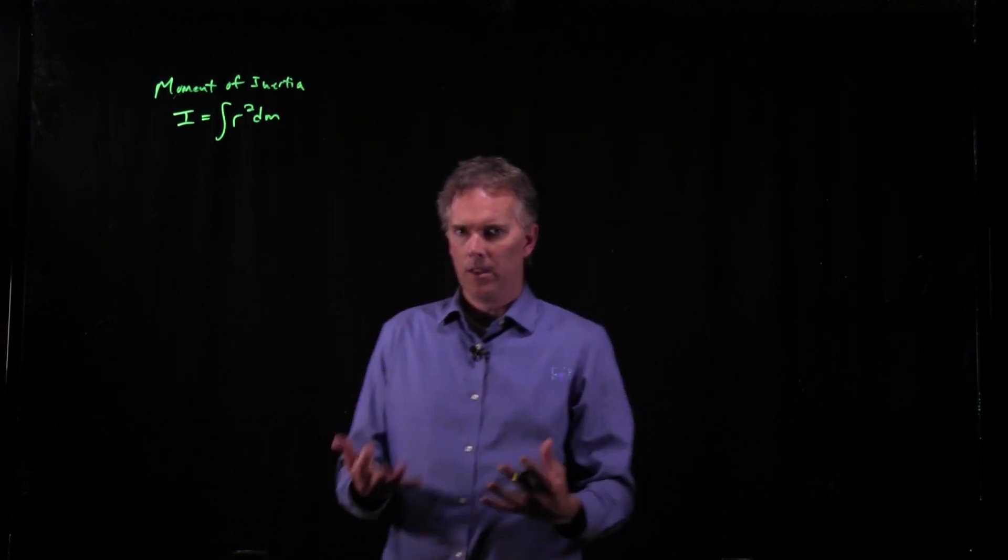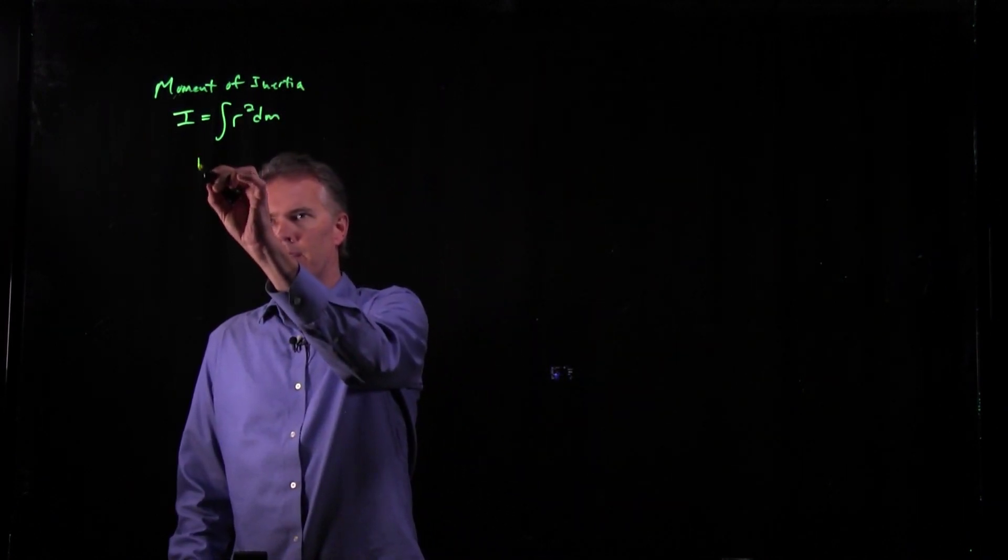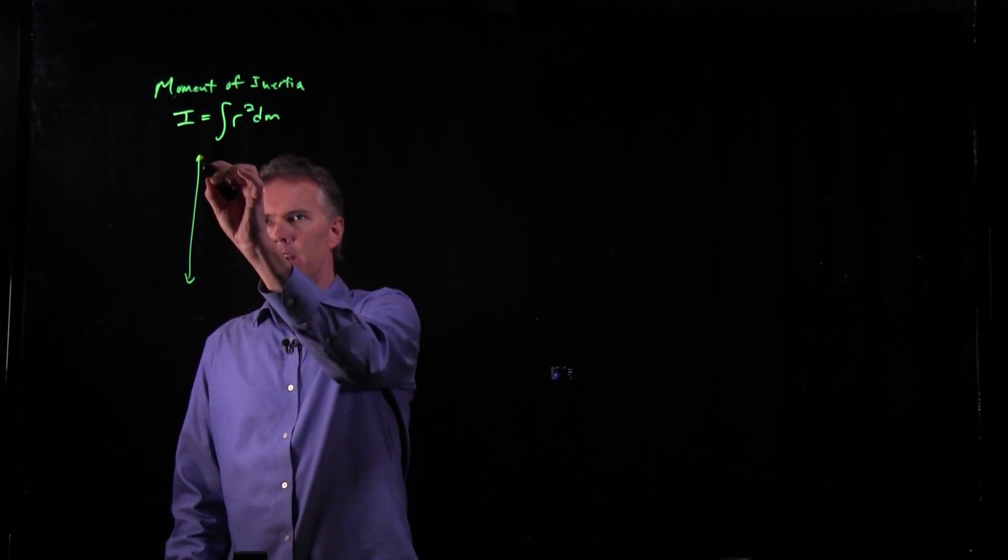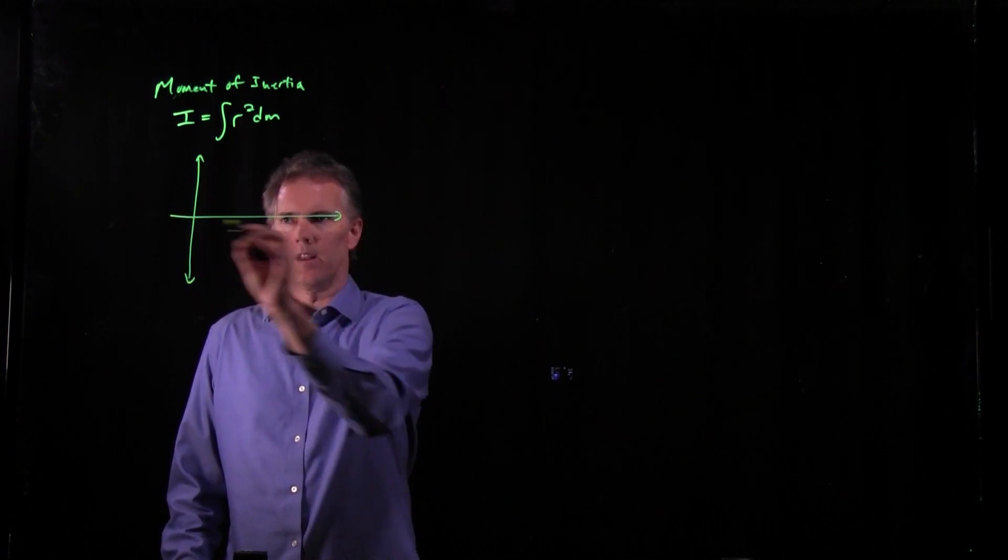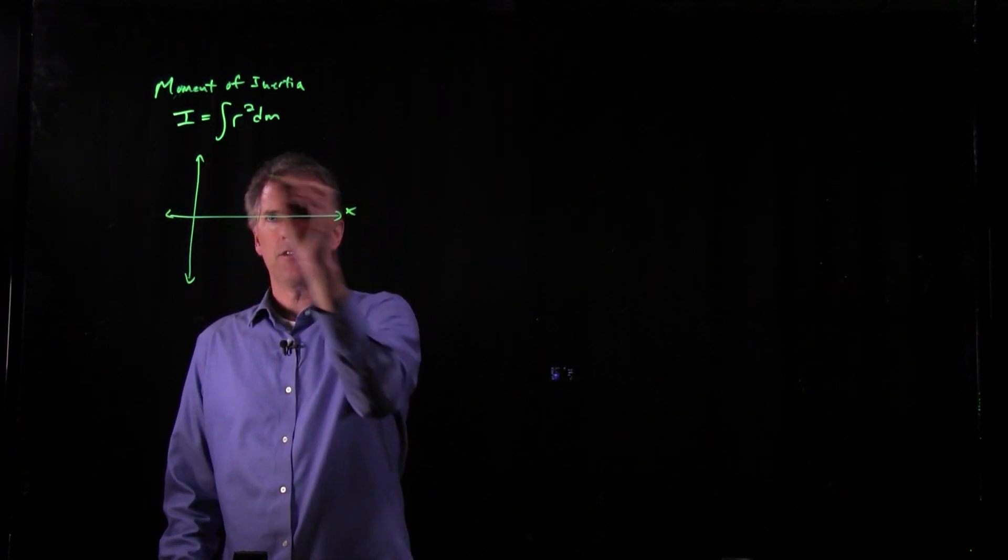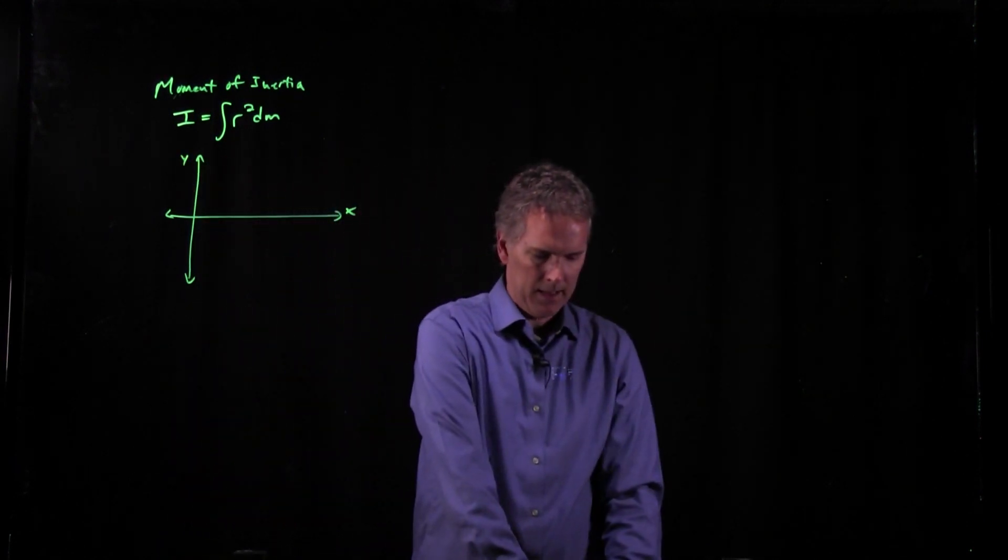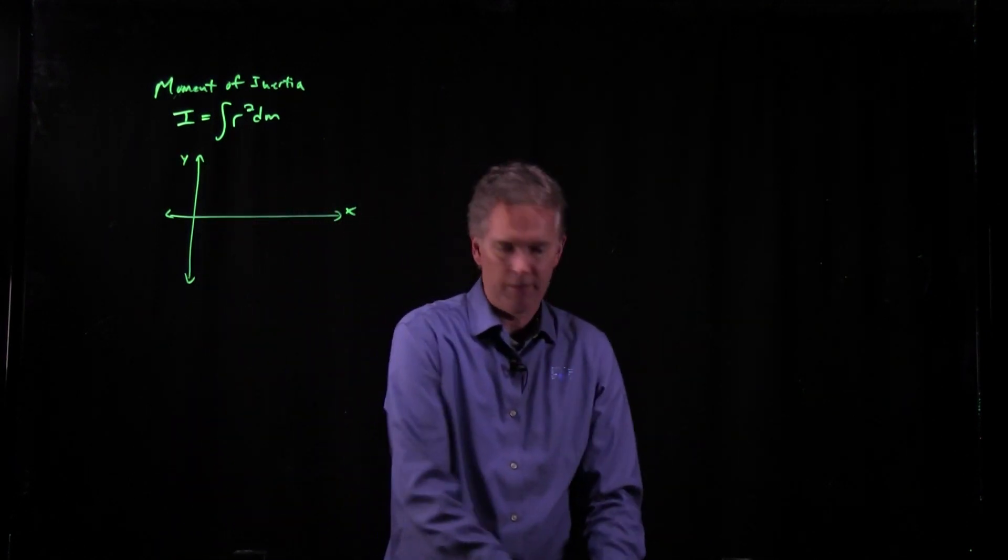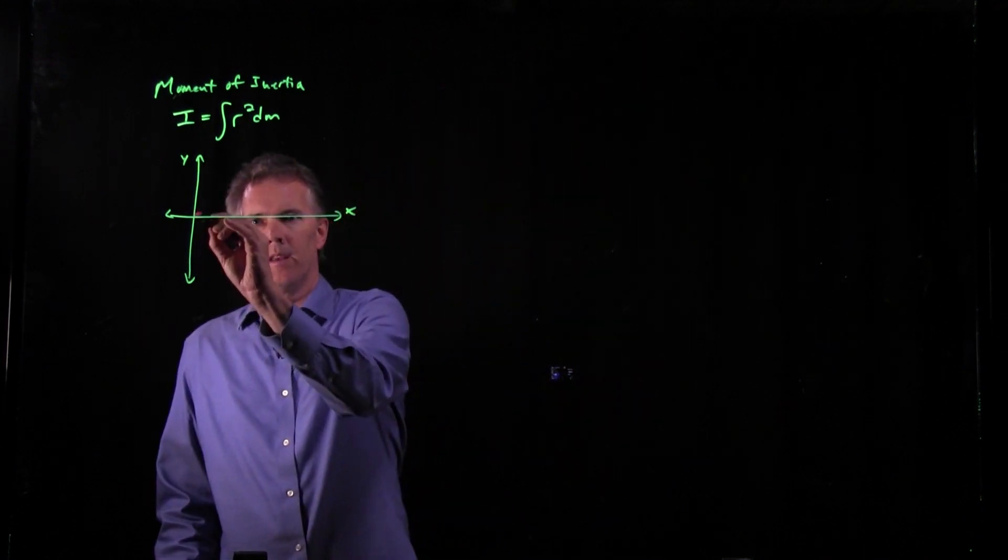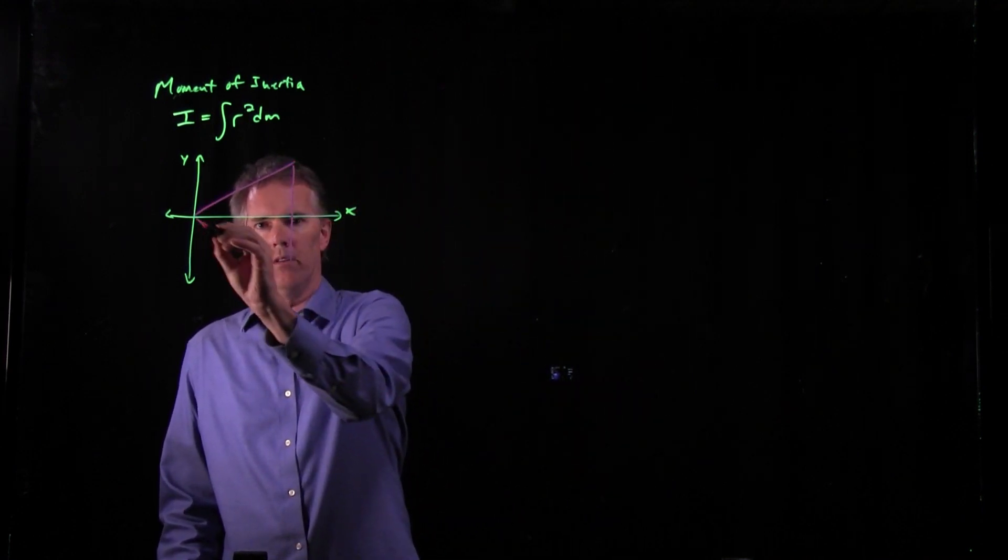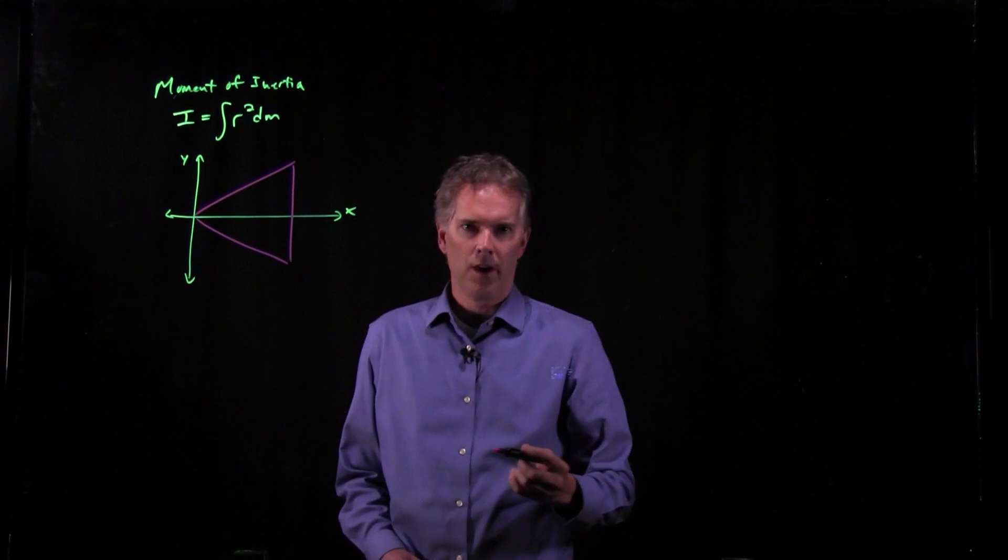If we want to calculate this for a particular shape, how do we do it? Well, let's say that our shape looks like this. We've got an xy coordinate system, and let's say that our shape, in fact, is a triangle.